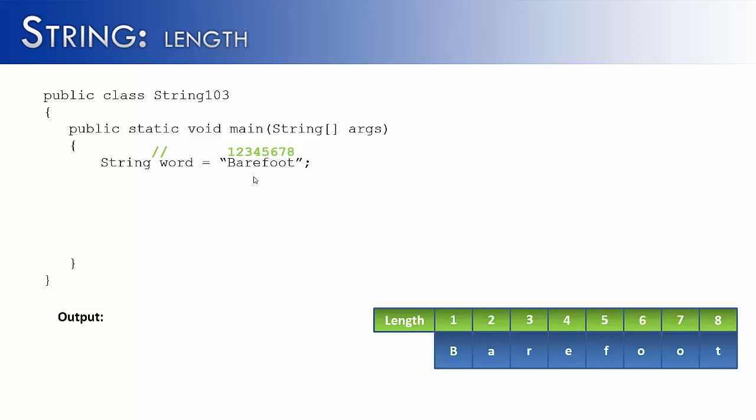Now if I want to use the method length, this is how I do it in the code. I would say the name of the string object, which is word, and then use length. And I could store it in an integer value called len. It's somewhat important to note that you can only have integer values as the length, as there's no such thing as a half character or a quarter of a character. So it will always return an integer value. And then I'm going to print out the length of barefoot is, and it should say eight. And it does.